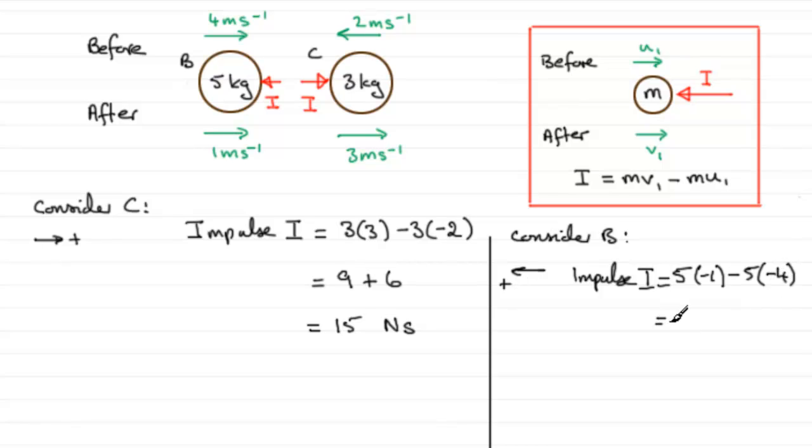And look what we get. We get 5 times minus 1 is minus 5. Minus 5 times minus 4 is plus 20. But when you do minus 5 plus 20, you get 15. 15 Newton seconds. Exactly the same I value as was received on C. But as I say, you've got to just take care over your positive sense in either part.